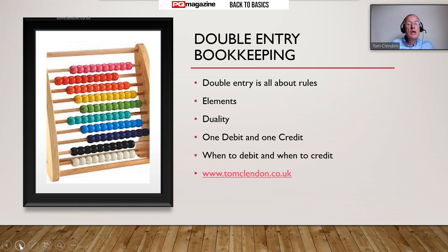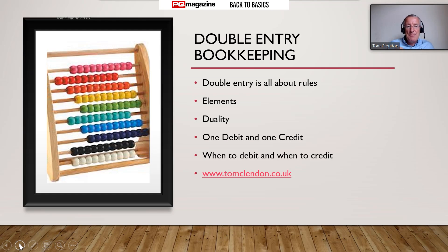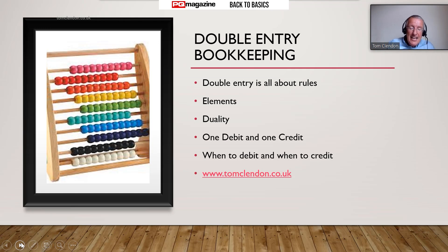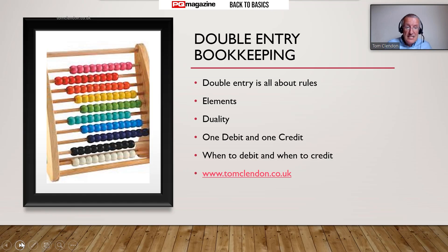Double entry bookkeeping is all about rules - don't think about it too much. Make sure you understand: there are five elements; there are two effects to each transaction; one will be a debit and one will be a credit; assets and expenses are debits when they go up; equity, liabilities and income are credits when they go up. My name is Tom Clendon and that is my website. This has been a brief video for PQ magazine - there is an accompanying article in the summer edition of 2020. Thank you very much for listening.